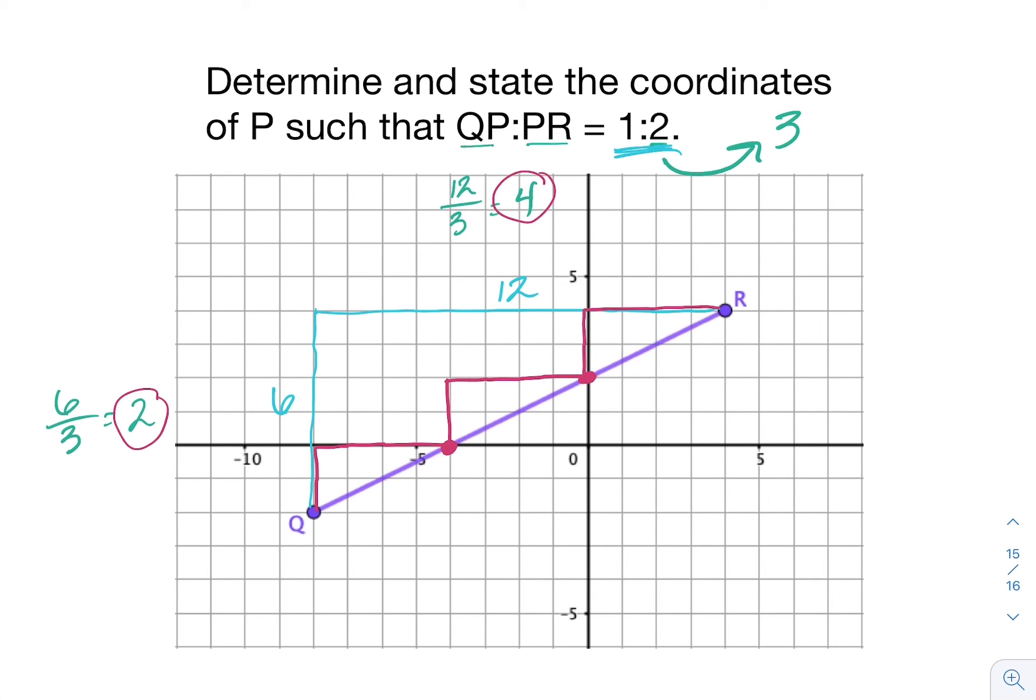You can see it looks like I've drawn three little triangles along this segment. Those are the three equal pieces that I've split it into, so I have three equal pieces along segment QR.